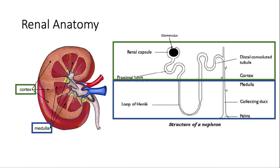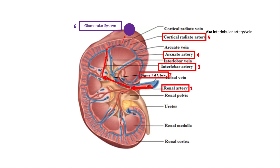Now let's start with the renal anatomy. Pay attention to the fact that there's a cortex and a medulla. Most of the important parts of the nephron are located in the cortex. The loop of Henle as well as the collecting duct are the portions found in the medulla. As far as renal blood flow goes, it begins with arterial flow coming in from the renal artery off the aorta, into the segmental artery, up into the interlobar artery, and then the arcuate artery.